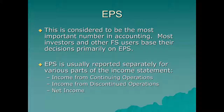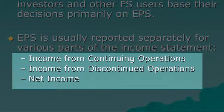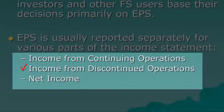Because earnings per share is such an important number, FASB has insisted it must appear on an income statement for that statement to be in good form. You need two earnings per share numbers — though three are listed here. Two are required and one is recommended. You must show income from continuing operations and the final net income earnings per share. Earnings per share from discontinued operations is only recommended, partly because it may not apply and partly because discontinued operations are going away, so FASB doesn't require it.